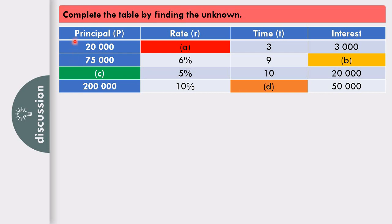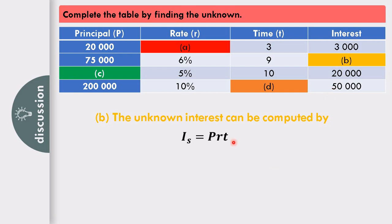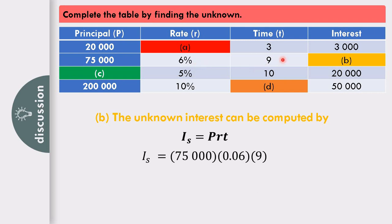In the second row, the unknown is interest. Using I sub S equals PRT with principal 75,000, rate 6% or 0.06, and time 9, multiplying gives I sub S equal to P40,500.